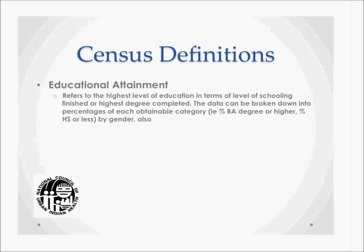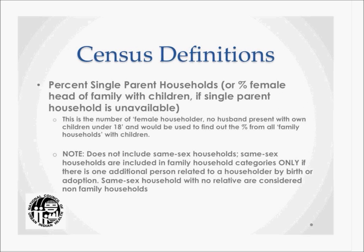Educational attainment refers to the highest level of education in terms of level of schooling finished or highest degree completed. The data can be broken down into percentages of each category, such as percent with a bachelor's degree or higher, or percent of high school or less graduates, which can be broken down further by gender. The percent single-parent households can also be looked at through the percent female head of family with children — the number of female householders with no husband present with own children under 18, used to find the percent from all family households with children.